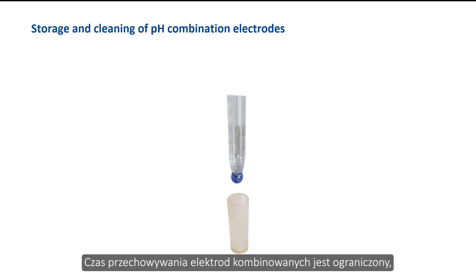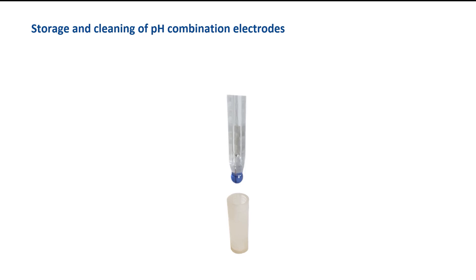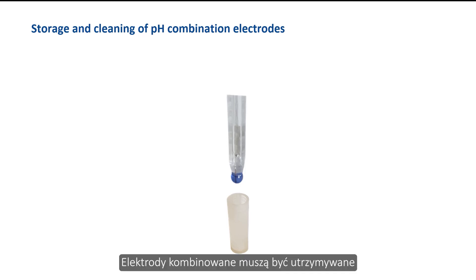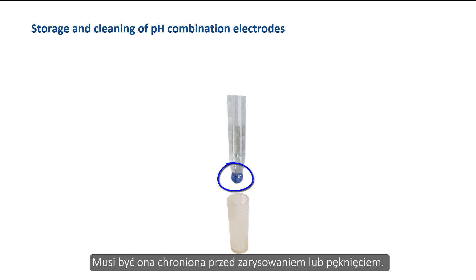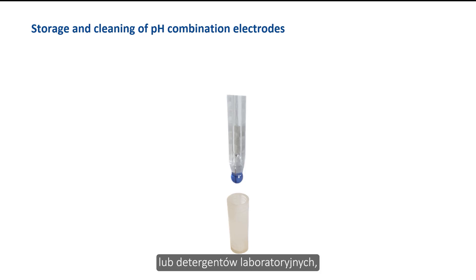The storage time of combination electrodes is limited; it is recommended to use them within 6 months at the latest. The electrodes are stored in a wet retaining cap filled with potassium chloride and must not dry out. Combination electrodes must be kept clean over their lifetime. The electrodes as a whole are quite stable, but the glass membrane is sensitive and must be protected from scratching or breakage. Cleaning can be done with water, or with glass cleaners and laboratory detergents such as alcohol or acetone if required.